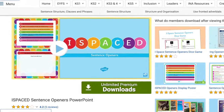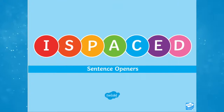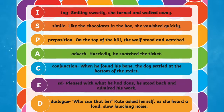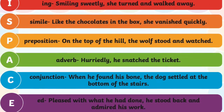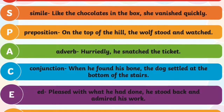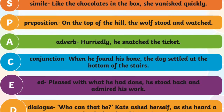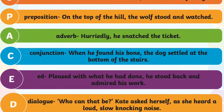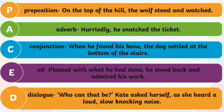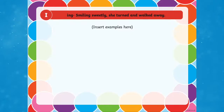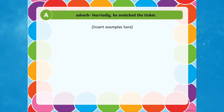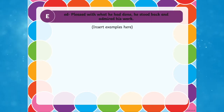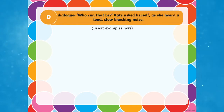The I-Space Sentence Openers PowerPoint is great to use to practice sentence openers with your class. The I in I-Space stands for ing starting words. The S is for simile. The P is for preposition. The A is for adverb. The C is for conjunction. The E is for ed words. And the D stands for dialogue. Use this PowerPoint to practice I-Space sentence openers with your class in an engaging way. Write your own examples or type the examples that children think of on the slides. Great for boosting vocab and a great way for your children to magpie from each other.